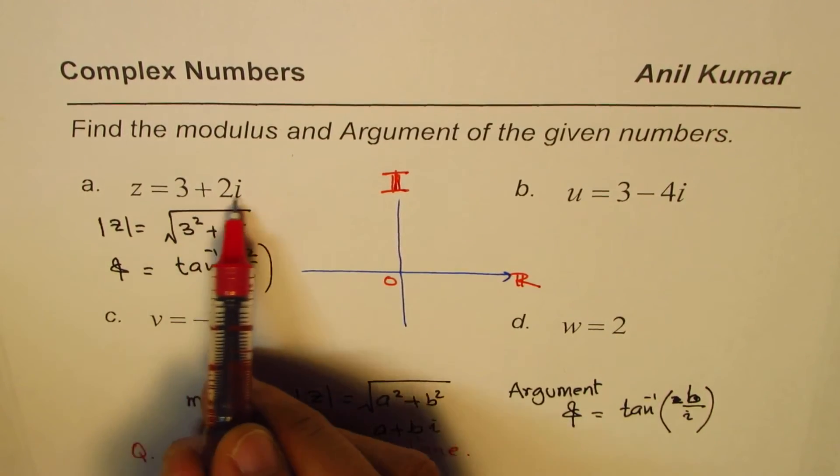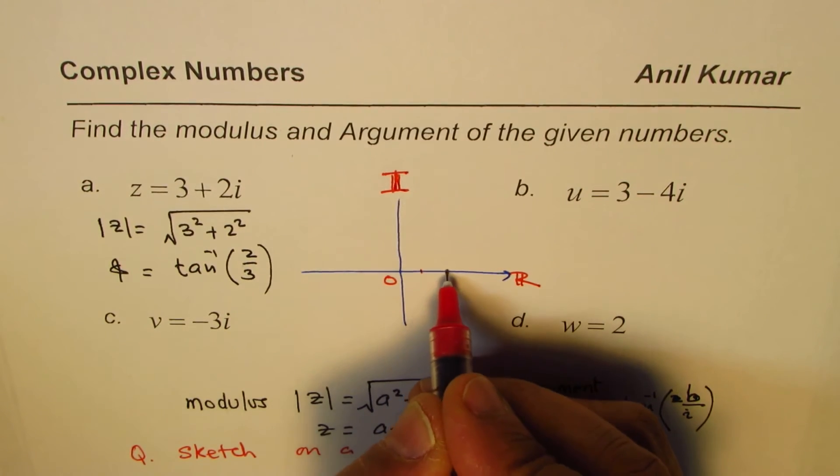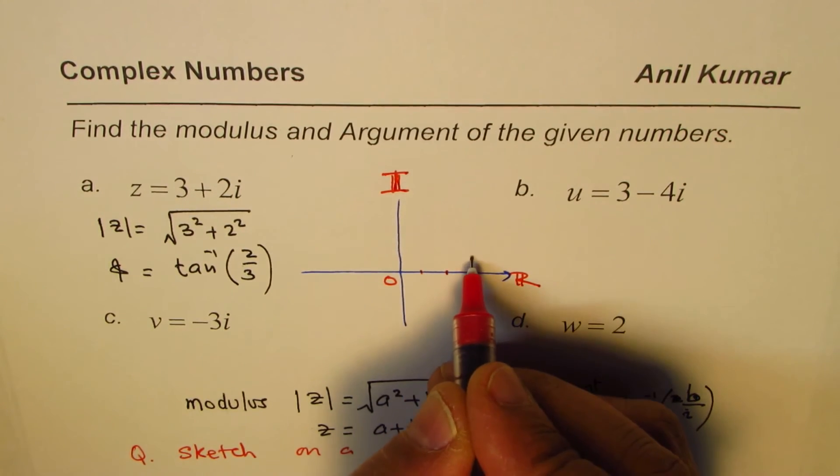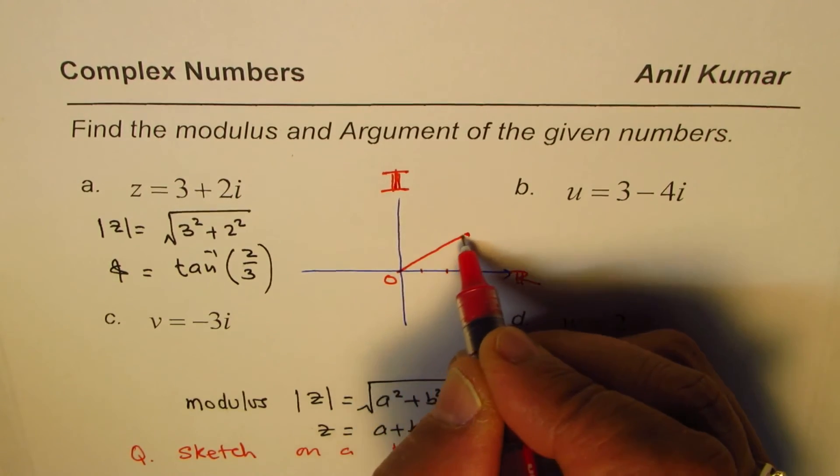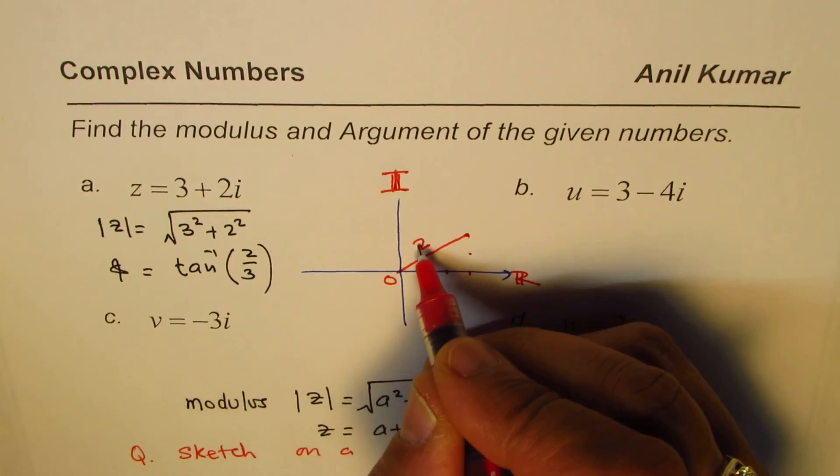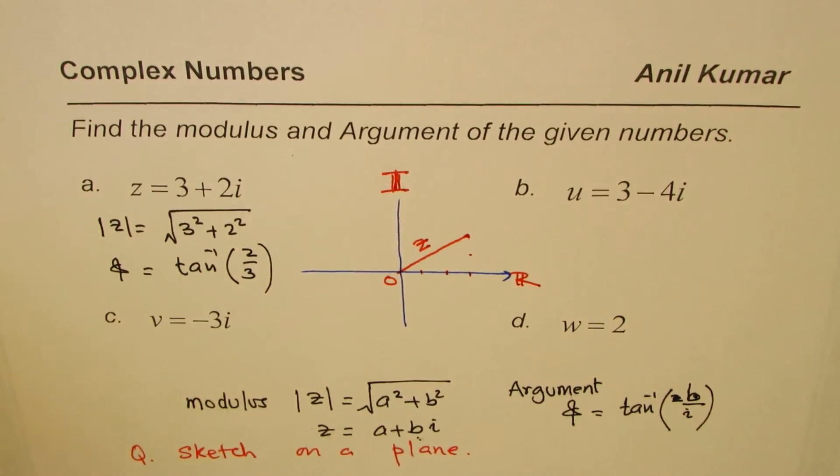For example, the first one, 3 plus 2i, so you go three units real axis, two units imaginary axis, so that represents z. So that is how you could do for rest also.